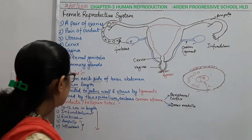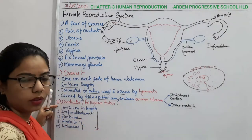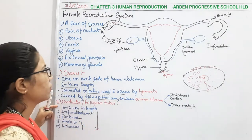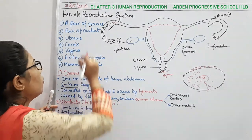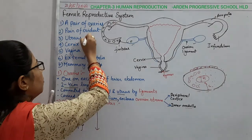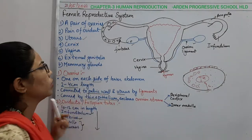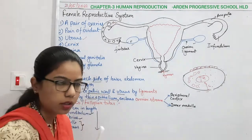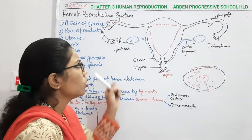As the ovary releases the ovum, it is taken by the fimbriae, moves forward to the infundibulum, then reaches the ampullary region, and from the ampullary region moves further into what is known as the isthmic region. This question can be asked as a pathway, so you should memorize this sequential pathway.